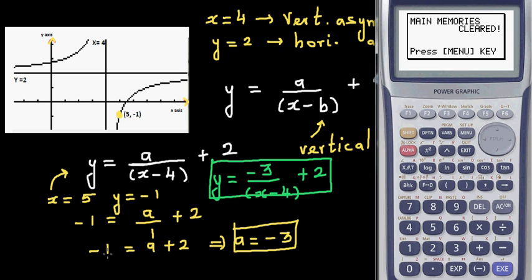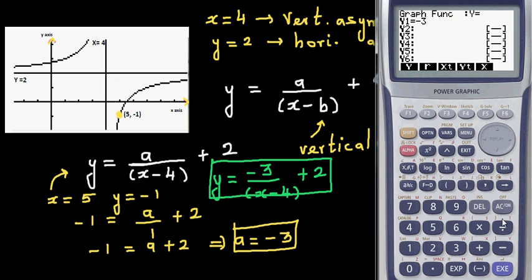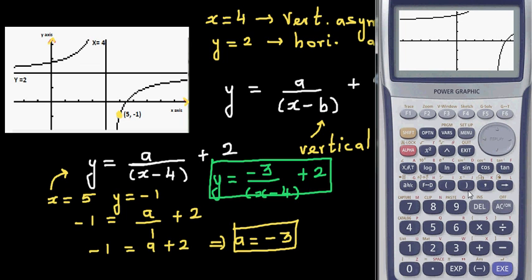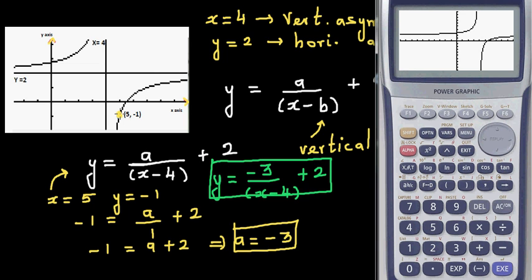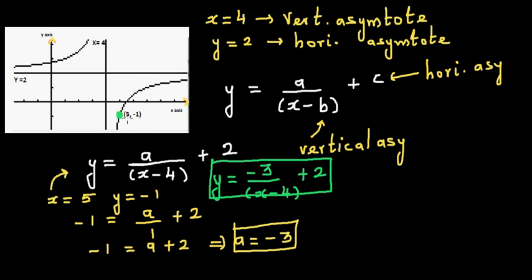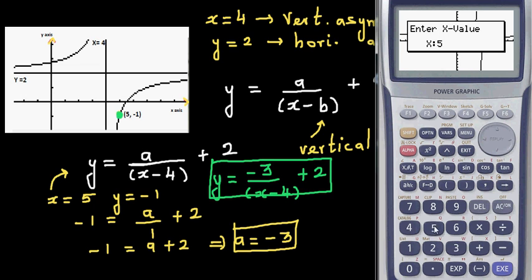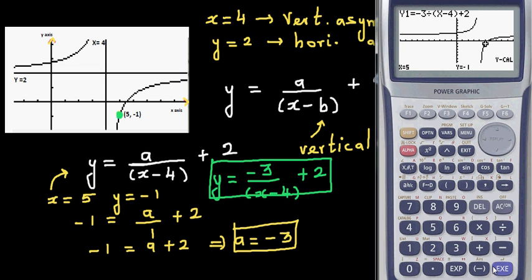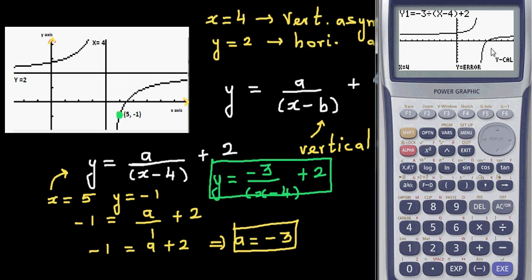Let's verify using a graphic calculator. Go to graph and type in: −3 / (x − 4) + 2. Set the scale to 10 by 10. We want to confirm that when x = 5, y = −1. Using Y-calc, when x = 4, we get an error — confirming that x = 4 is undefined, which is the vertical asymptote.